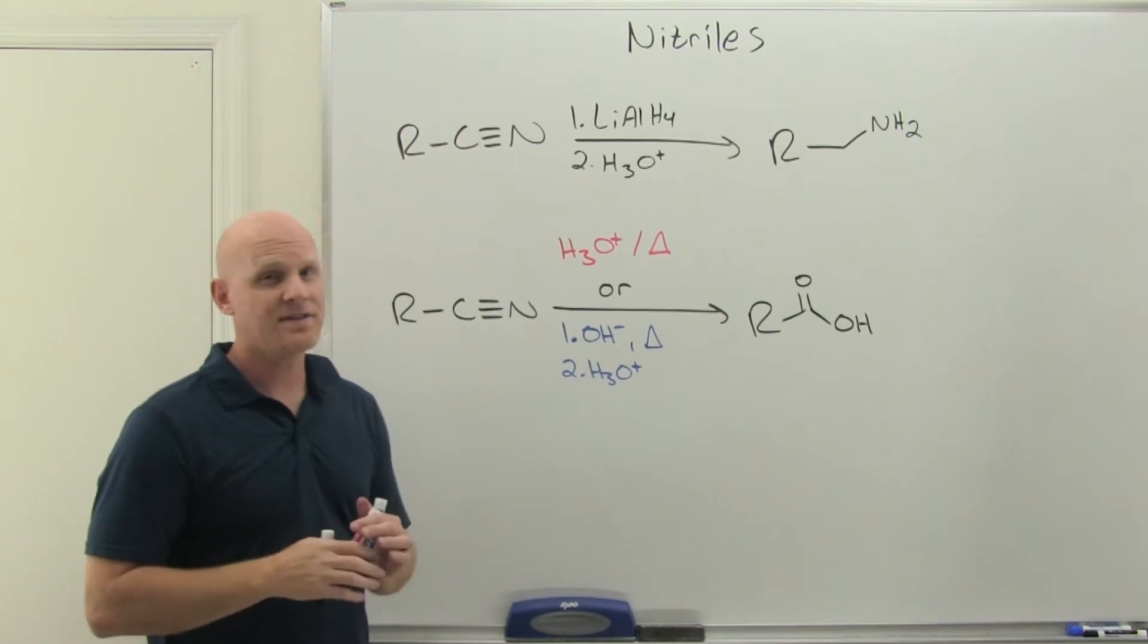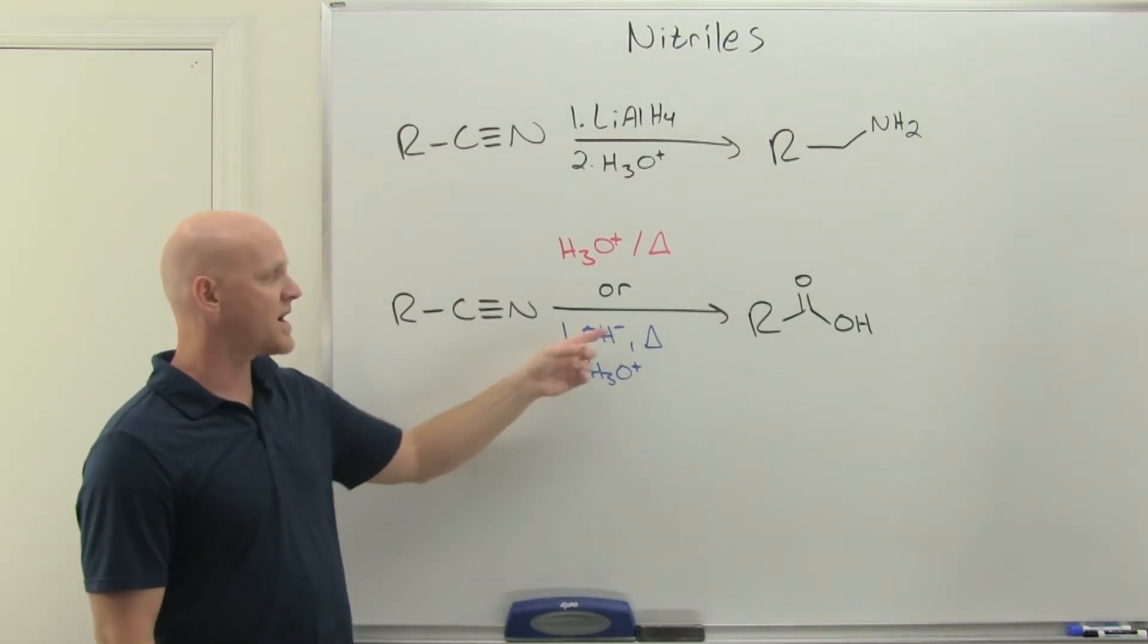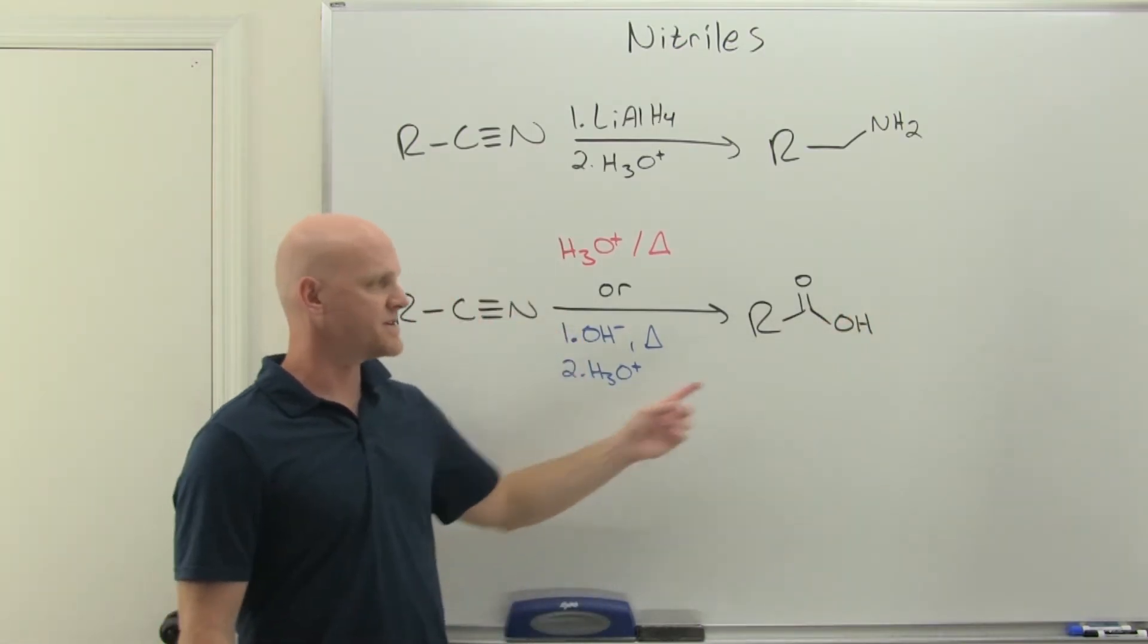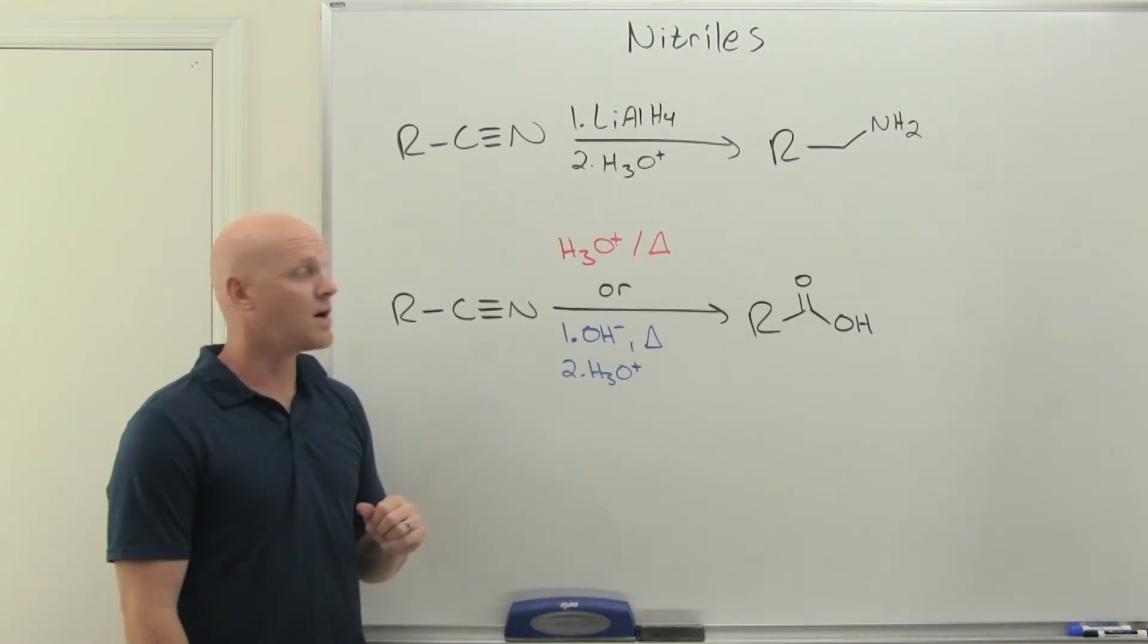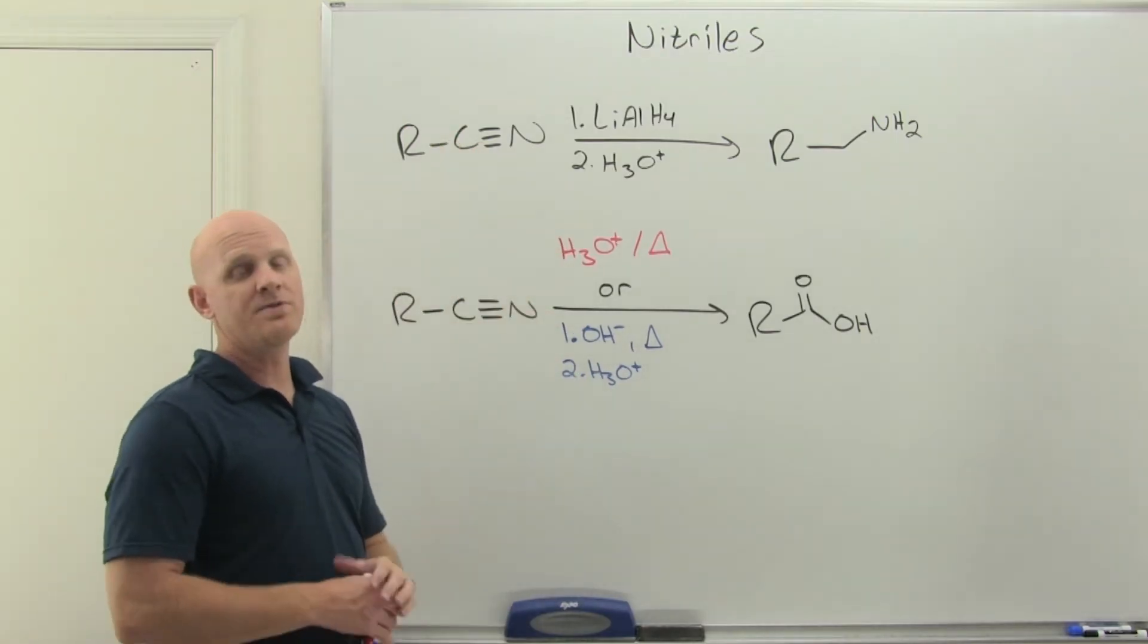In addition to doing this in an acid catalyzed hydrolysis, you can also do base catalyzed hydrolysis with hydroxide and heat. At the end of step one, you'd have the corresponding carboxylate, and then you just add H3O+ to protonate it and get the corresponding carboxylic acid. Those are our two review reactions.